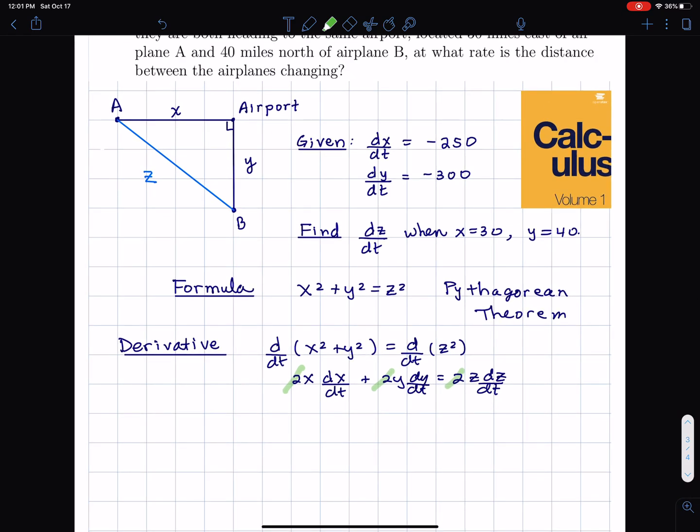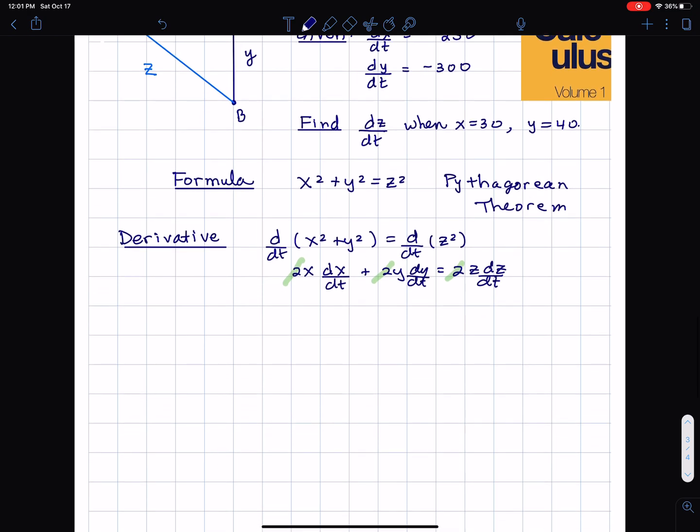At this point, we can put everything in. We have dx/dt is -250, dy/dt is -300, x is 30, y is 40. What we don't have, which we want to put in, is z. We're trying to find dz/dt, but we need to put in z. So one of the things we want to find now is when x equals 30 and y equals 40, what is z?